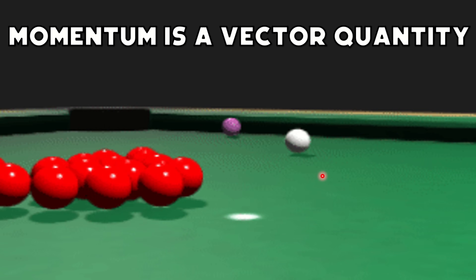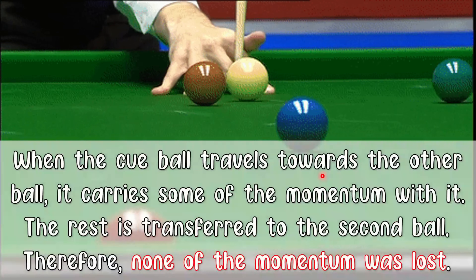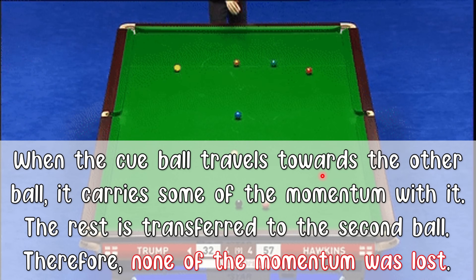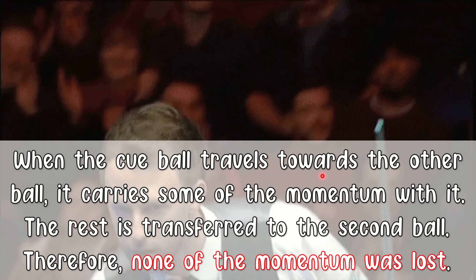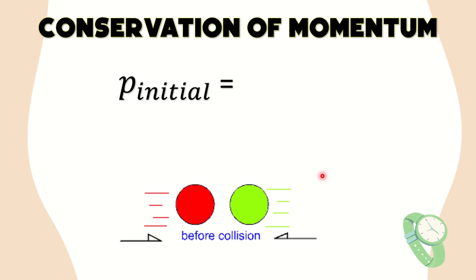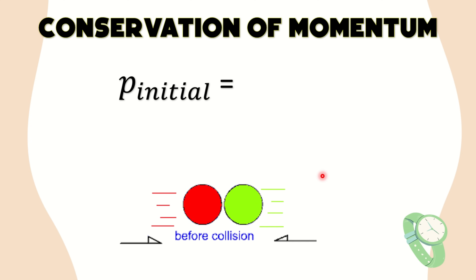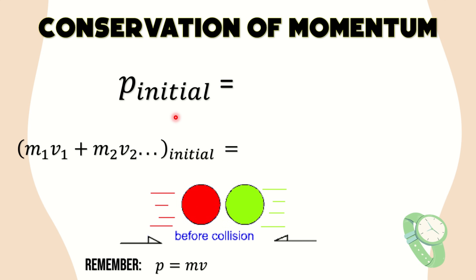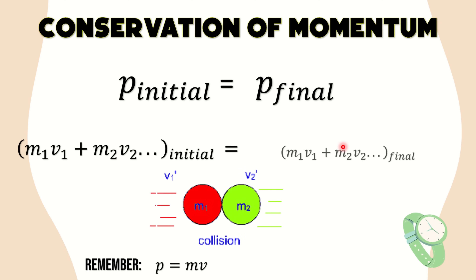Remember that momentum is a vector quantity — it has magnitude and direction. When the cue ball travels toward the other ball, it carries some momentum with it; the rest is transferred to the second ball. Therefore, none of the momentum was lost, only transferred. Using an equation, we can say that the total momentum P before the objects interact, or P-initial, is equal to the total momentum of all objects after they interact, or P-final. P stands for momentum and it is the product of mass and velocity.